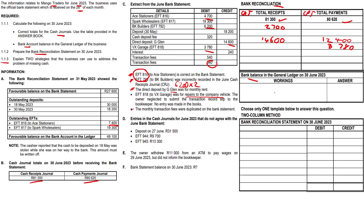The monthly transaction fees were duplicated on the bank statement, so we plug in that R540. The cash deposit fee counts as bank charges, so you can give a round number of R860, or alternatively show it as R320 plus R540 on two separate rows.